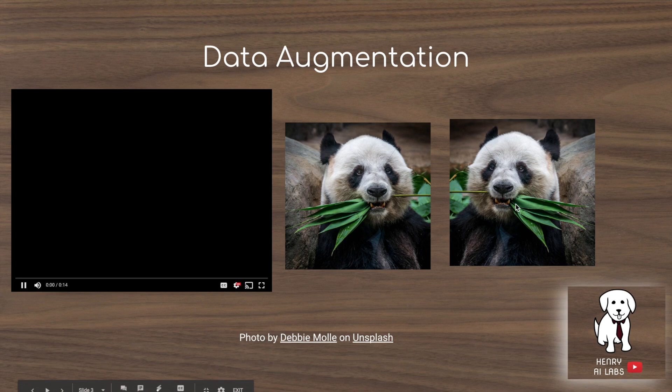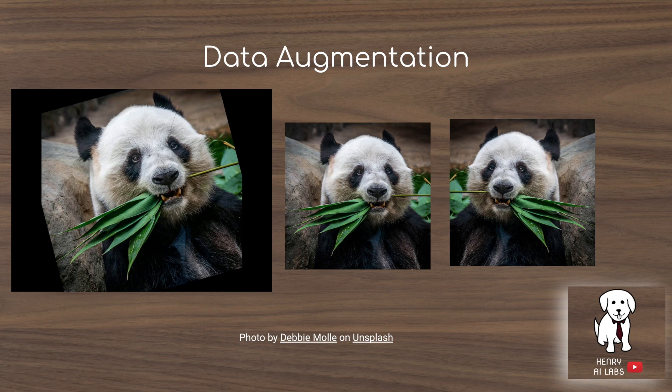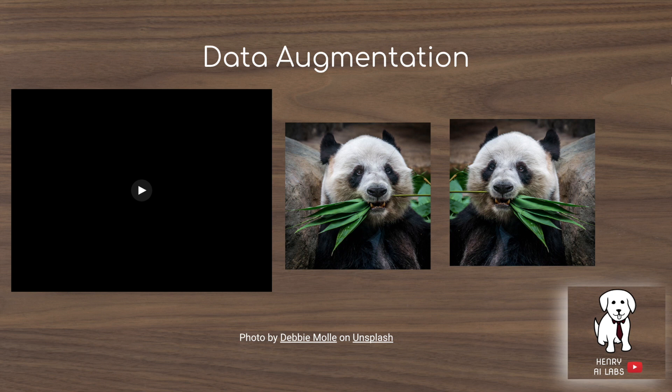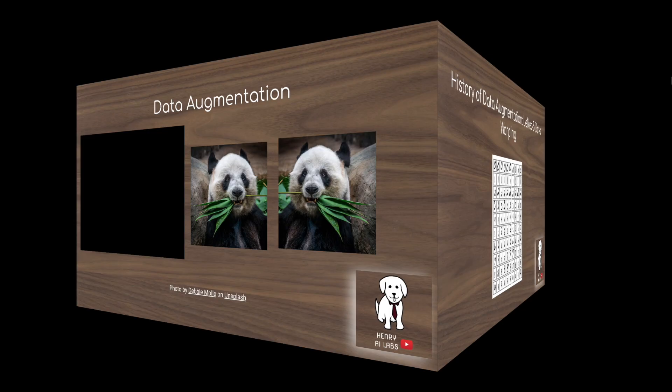Data augmentation — shown here in these rotation images in the video on the left — is a way of doing manipulations on data such that you have new data points. It serves as a regularizing effect such that you can hard code these translational invariances into your model. For example, you would want your image recognition model to recognize the panda in the normal image and in the horizontally flipped image.